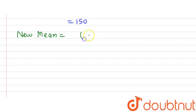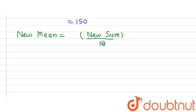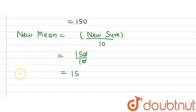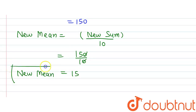New mean equals new sum divided by number of observations. The number of observations is 10 and the new sum is 150, so 150 divided by 10 gives us the new mean as 15. This is our answer.